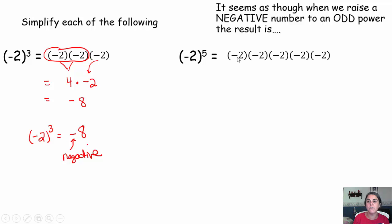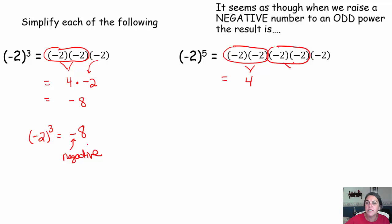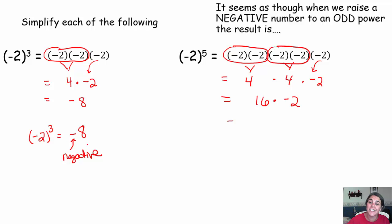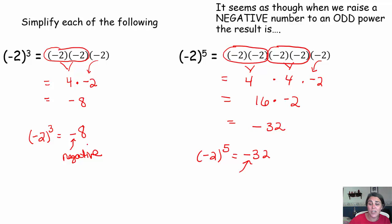Let's try it with negative 2 to the fifth. Again, I like to try to pair up pairs of negative factors, because a negative times a negative is a positive — 2 times 2 is 4. Then another pair: negative times a negative is a positive — 2 times 2 is 4. And I keep seeing that I have this extra negative factor trailing along at the end. Now I have 4 times 4 is 16, times a negative 2 — a positive times a negative is a negative — 16 times 2 is 32. So negative 2 to the fifth power gives us negative 32. That answer is also negative.